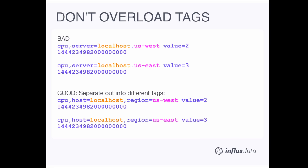Another bad thing to do is overload tags. This Graphite-style schema — hostname.datacenter all under server — makes the data more difficult to query and is non-intuitive. Separate that data out into different tags. That allows you to query by region and by host independently, and avoids confusion when querying by hostname.